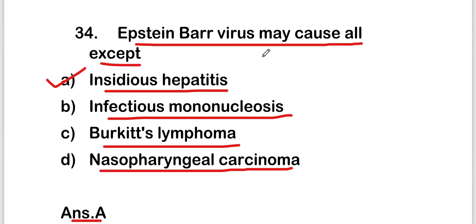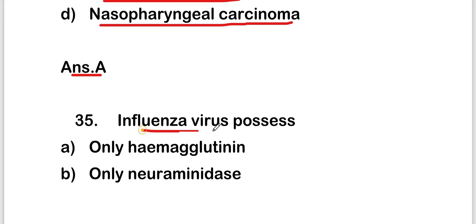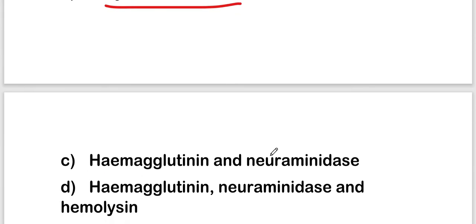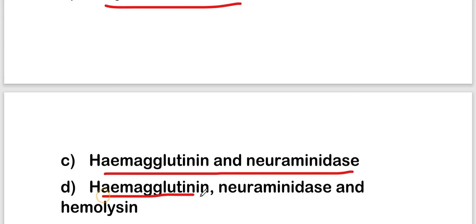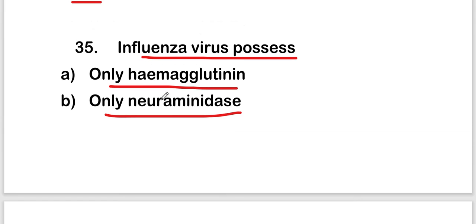The next question is: influenza virus possesses only hemagglutinin, only neuraminidase, hemagglutinin and neuraminidase, or hemagglutinin, neuraminidase and hemolysin? The right answer is option C, hemagglutinin and neuraminidase. So influenza virus possesses hemagglutinin and neuraminidase.